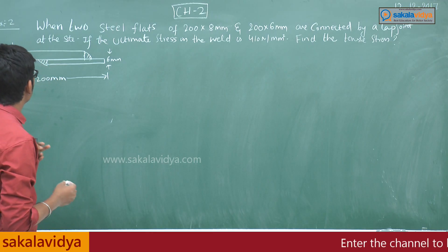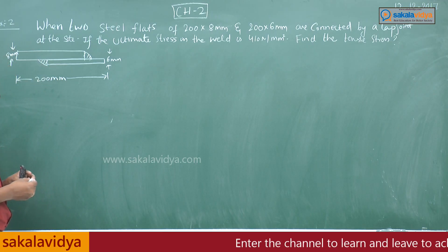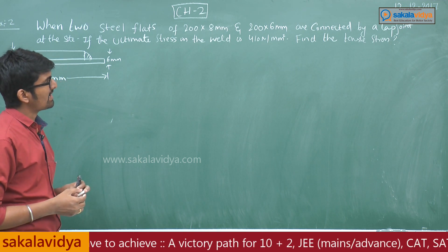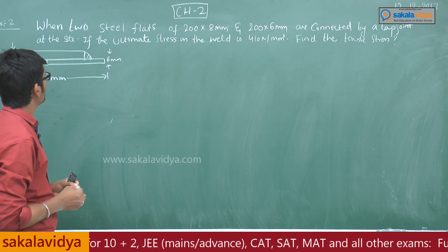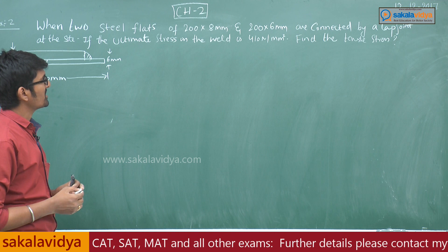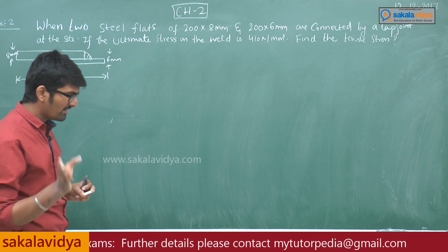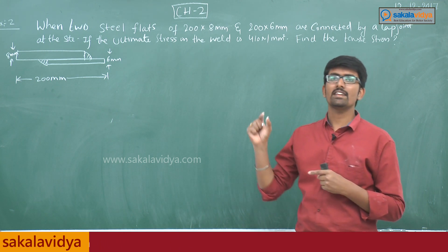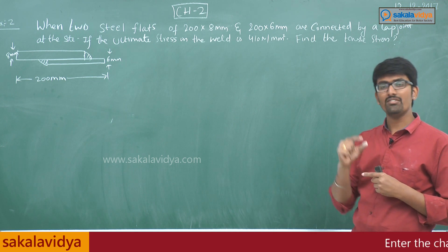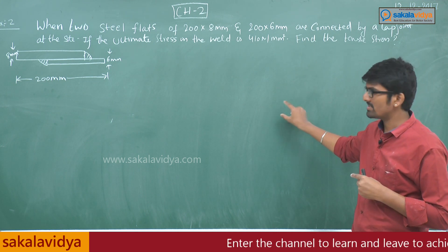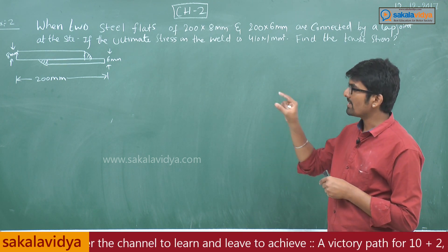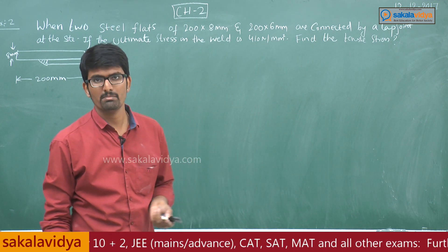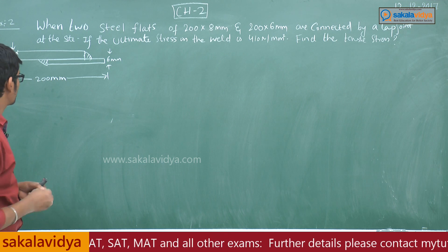Problem number 2: when two steel flats of 200×8 mm thickness and 200×6 mm thickness are connected by a lap joint as shown, the ultimate stress in the weld is 410 Newton per mm square. Find the tensile stress. In the previous example we saw two flat plates connected by a lap joint with uniform thickness, but in this question the thickness of the two plates are different — 8 mm and 6 mm — so this example is completely different from the previous one.